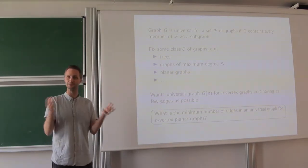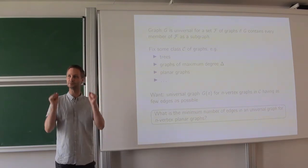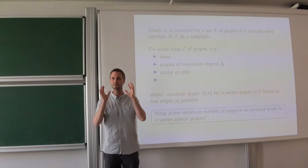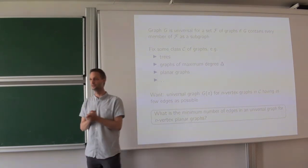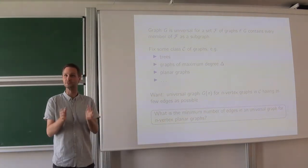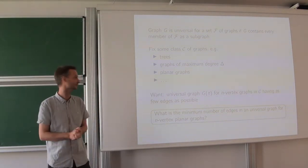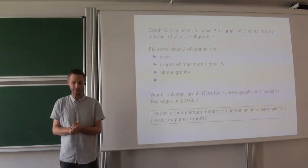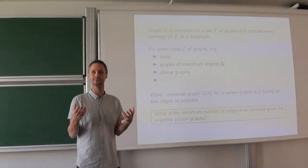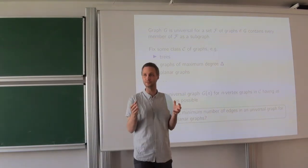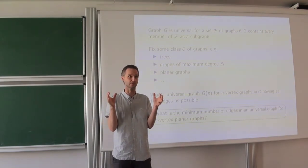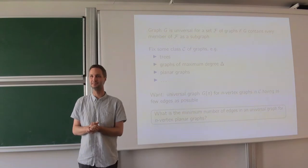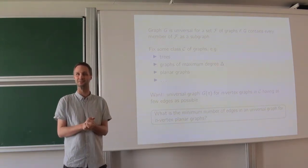If you care about n-vertex planar graphs, you want a single graph that contains all your n-vertex planar graphs as a subgraph. If you care about n-vertex trees, you want to do the same for those trees. It's a single graph containing all graphs from your set as a subgraph. Let me stress that your universal graph does not have to belong to the class of graphs you are interested in. So if you build a universal graph for planar graphs, your universal graph does not need to be planar. That would be quite restrictive.